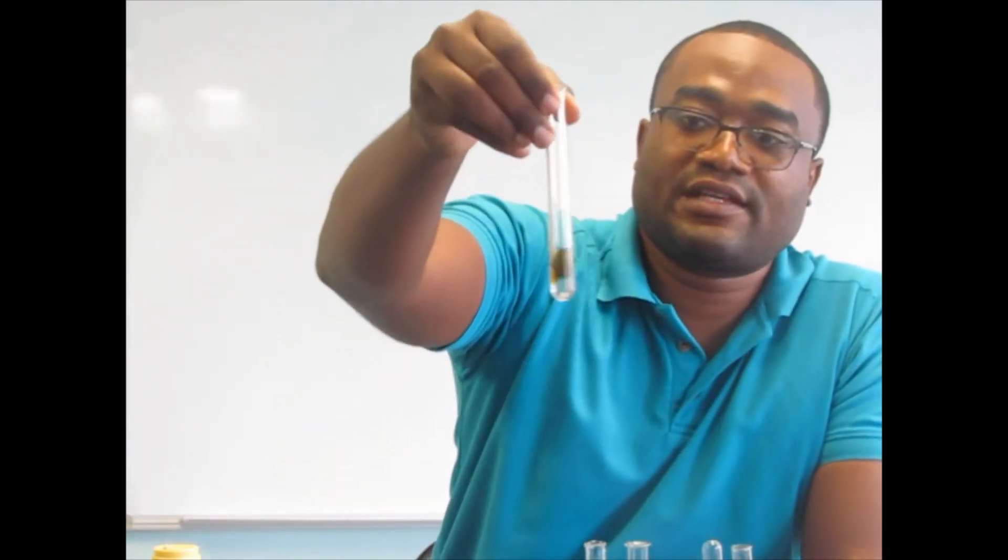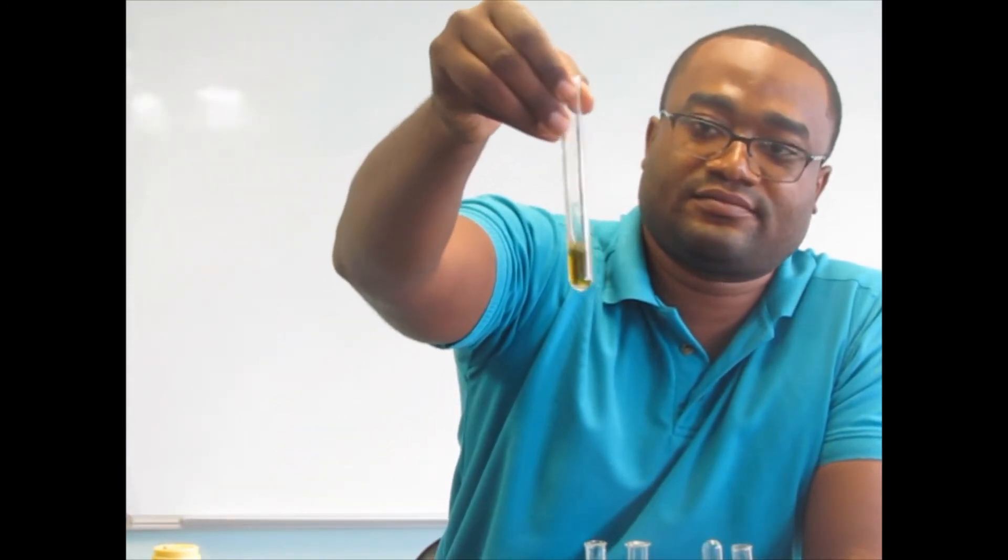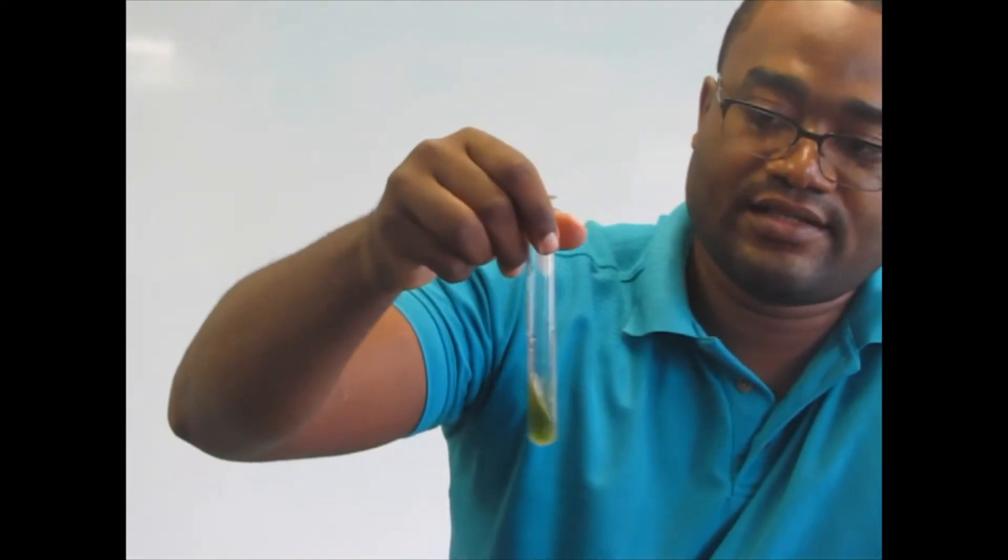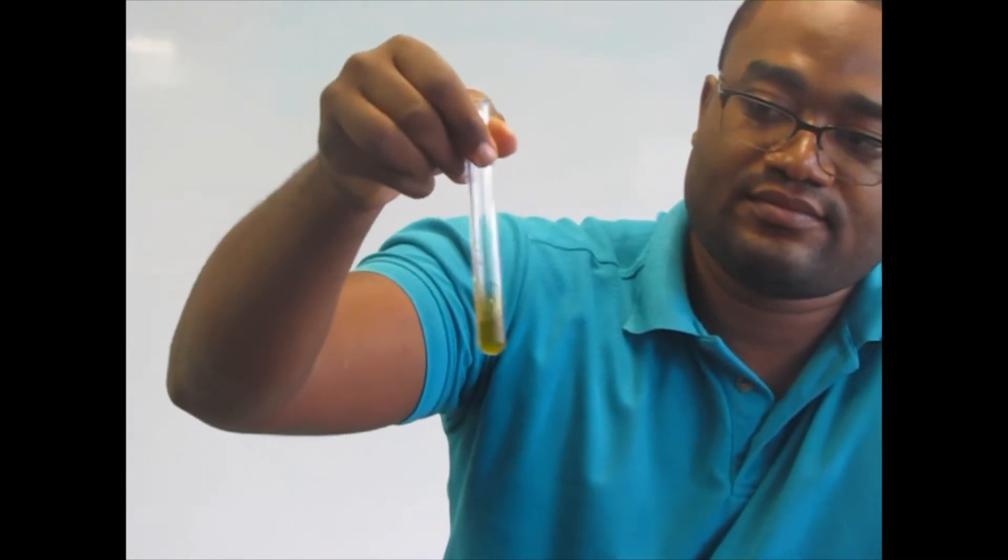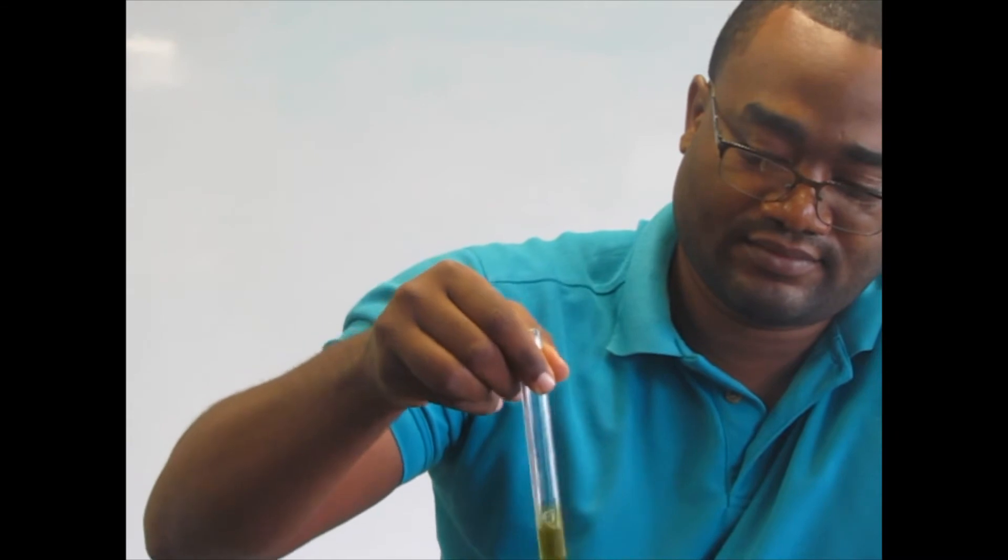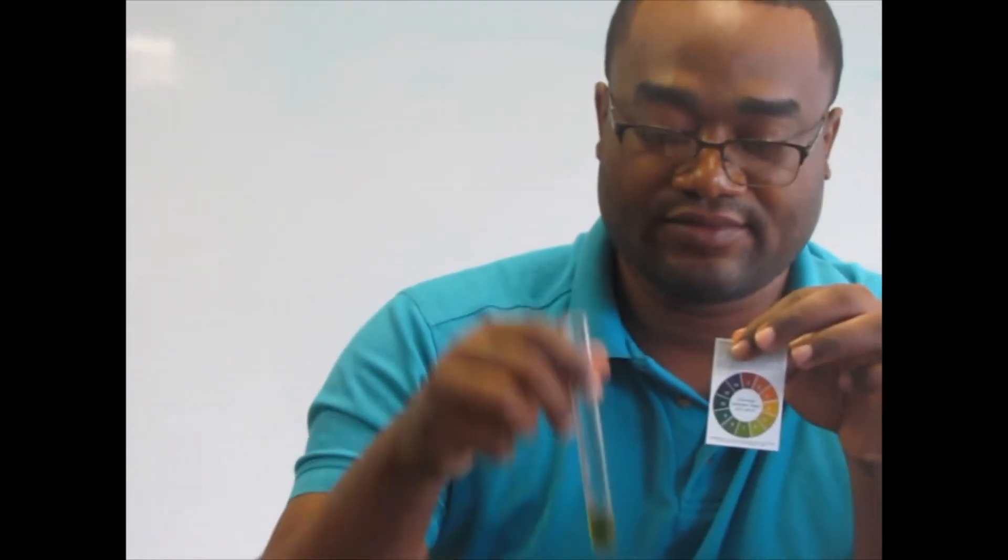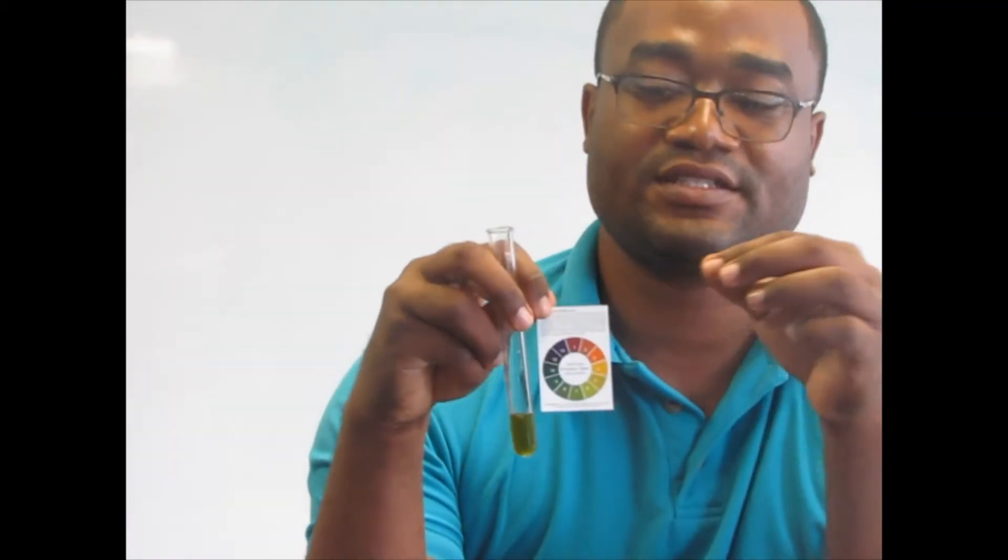So in our first test tube, we are going to give it a little stir. And then we are going to use the pH scale to identify which pH our soil samples are. So for this sample here, we are going to look at it and compare it to the pH meter.